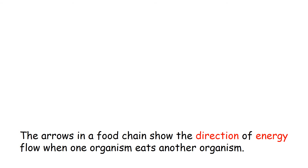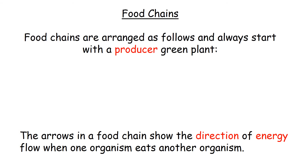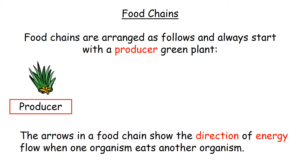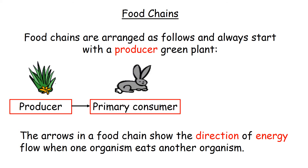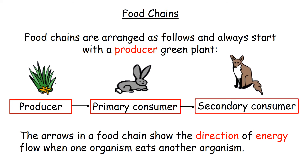We're going to look at this in a food chain. Food chains are arranged with the producer at the start — for example, grass. Then you have the primary consumer, for example a rabbit. Then you have the secondary consumer, for example a fox. So the producer is eaten by the primary consumer, and the primary consumer is eaten by the secondary consumer.